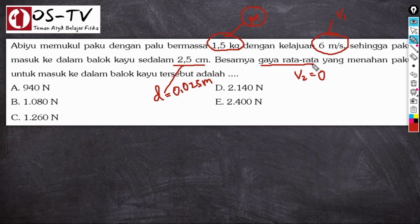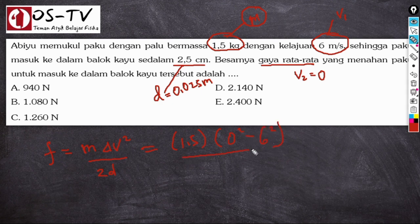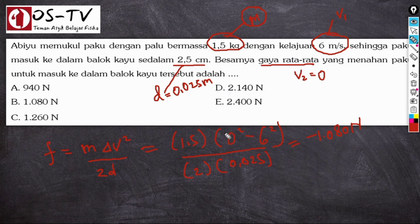Dengan menggunakan rumus cepat F = m × ΔV² / (2D): F = 1,5 × (0² − 6²) / (2 × 0,025) = 1,5 × (−36) / 0,05. Kalau perhitungan ini kita selesaikan, hasilnya adalah −1.080 Newton. Tanda minus menyatakan bahwa gaya rata-rata yang menahan paku berlawanan dengan arah gerakan paku. Dengan demikian, besarnya gaya penahan itu adalah 1.080 Newton.